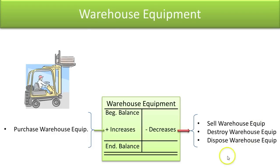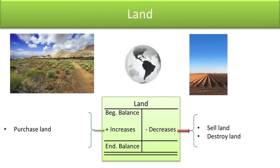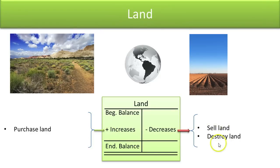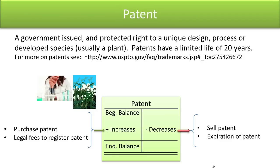Whenever you no longer have the warehouse equipment, your asset account needs to decrease. Land is straightforward — it increases when you buy land and decreases when you sell it or the land is somehow destroyed, like falling into the ocean in a tsunami. It can't be an asset if you can't find it anymore.